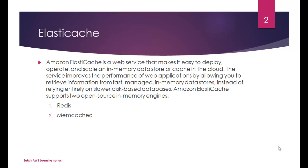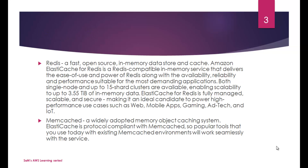ElastiCache is the perfect answer for that scenario, supporting Redis and Memcached as its two open source in-memory engines. Redis is a fast open source in-memory data store and cache. Amazon ElastiCache for Redis is a Redis-compatible in-memory service delivering ease of use, availability, reliability, and performance for demanding applications. Both single-node and up to 15-shard clusters are available, enabling scalability up to 3.55 terabytes of in-memory data.